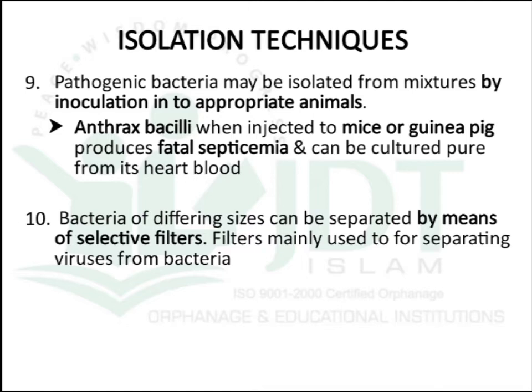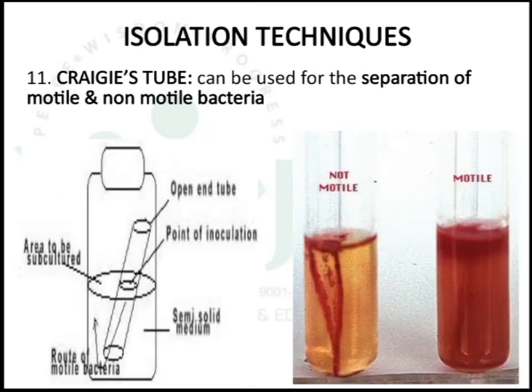The tenth method: bacteria of different sizes can be isolated by means of selective filters, which are mainly used for separating viruses from bacteria. The next method for isolation of bacteria is by using the Craigie tube, which can be used to separate motile and non-motile bacteria.